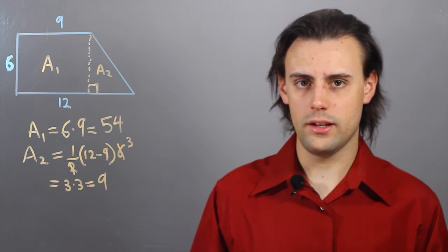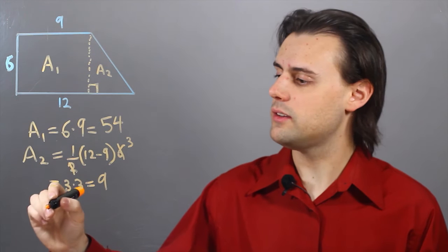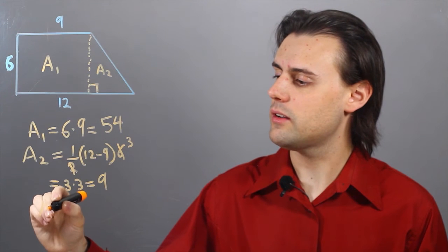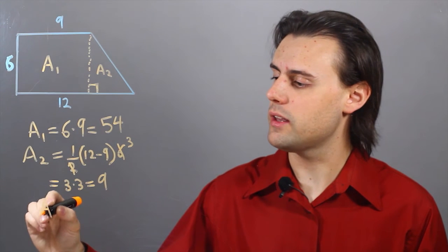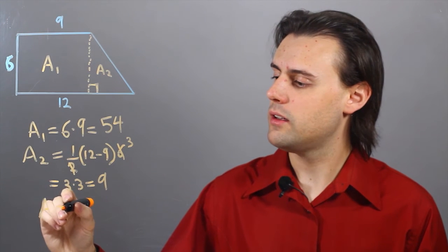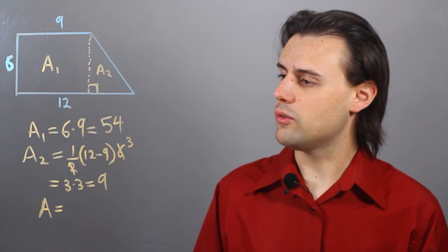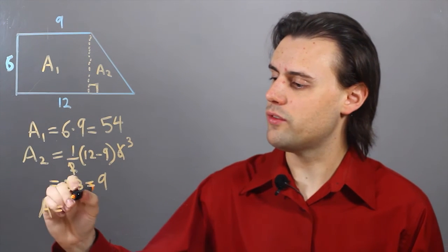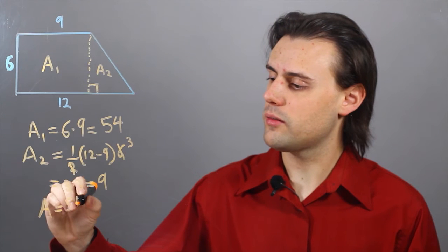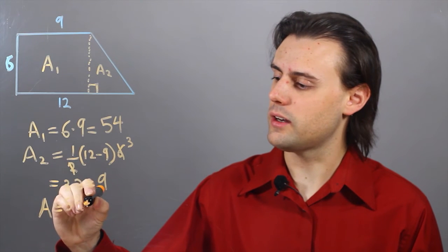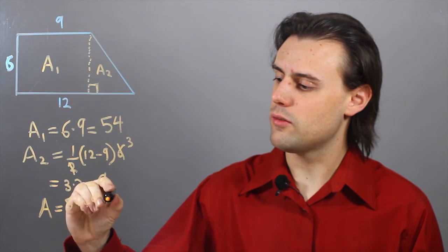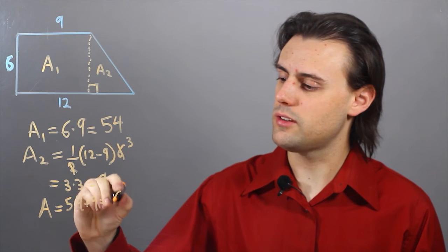So finally, the entire area of my polygon is going to be equal to 54 plus 9, which is equal to 63.